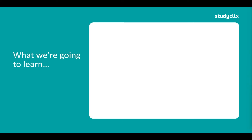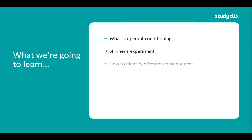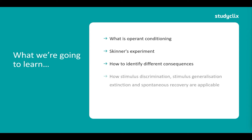In this video we're going to cover four key things: what operant conditioning is, Skinner's experiment as a foundational study, how to identify the different consequences using a flowchart, and how stimulus discrimination, generalization, extinction, and spontaneous recovery are applicable to operant conditioning — as people often think these only apply to classical conditioning.